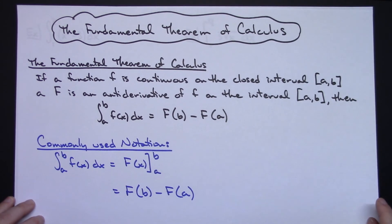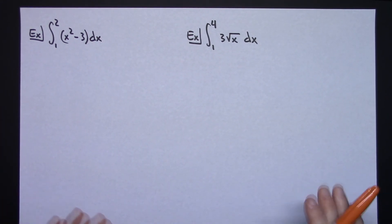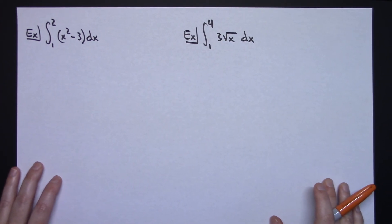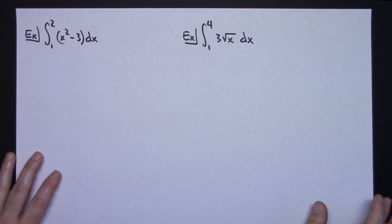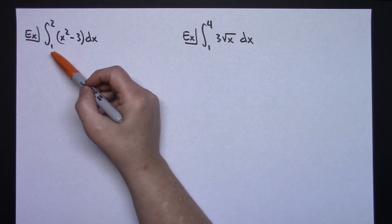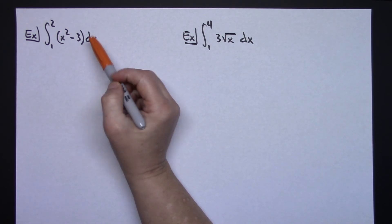Alright, so we're going to work on a couple of examples. Alright, straightforward, easy examples, just kind of to get the theorem down pat. This would be a very early on examples of these definite integrals. Okay, so let's say we're integrating from 1 to 2, and we've got x squared minus 3 dx.